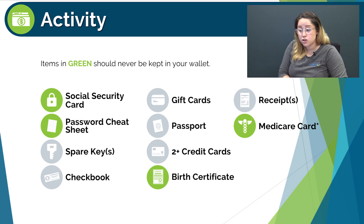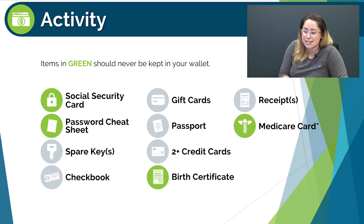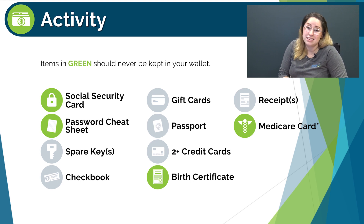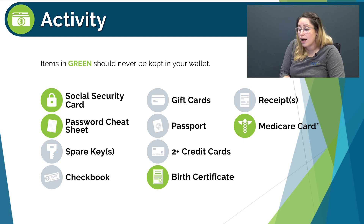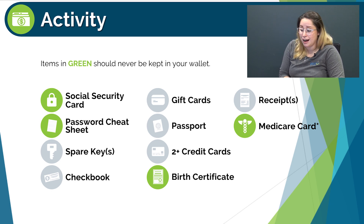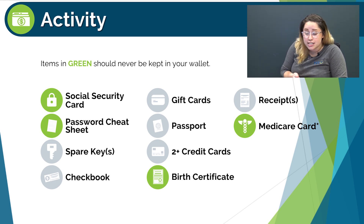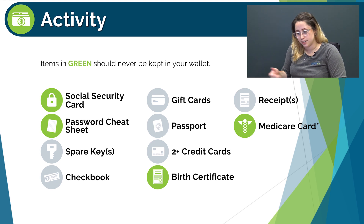Let's briefly go over each item. Social security card: it's risky to keep this on you because it's difficult to get a replacement and it can be easily used to steal your identity. Password cheat sheet: if someone were to steal your wallet or purse, they would have both your valuable physical items and access to your important online accounts. Spare keys: you shouldn't keep your spare keys with your regular keys because if you lost your wallet or purse, you're out of luck.